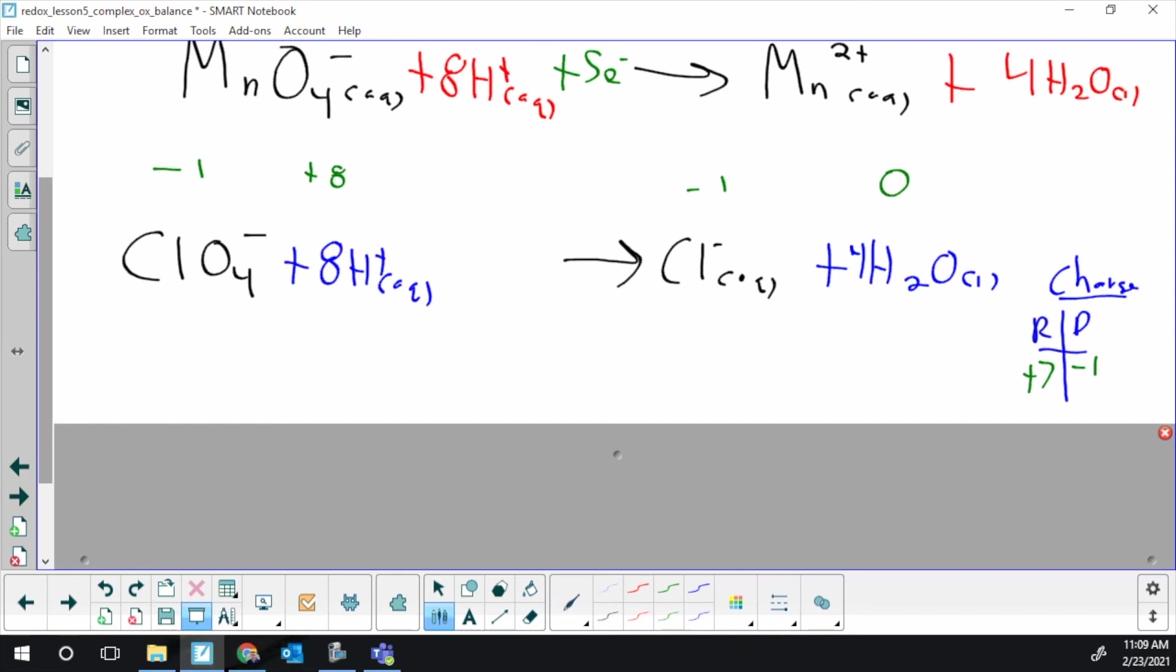This isn't exactly the same as the example I just did. I need to take the high side, which is the seven, and bring it all the way down to -1. That's an eight-electron difference to get that down to the -1, so I add in eight electrons. And I balance this complex half-reaction.